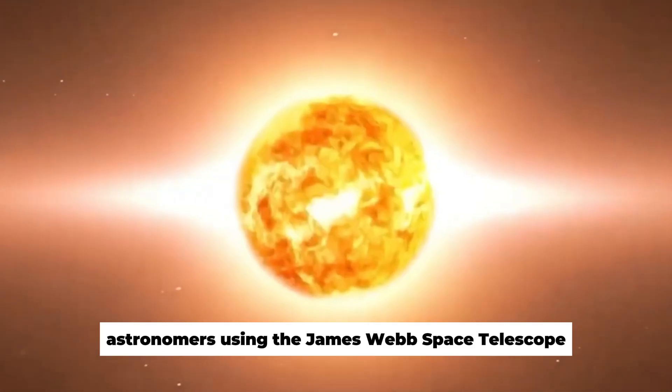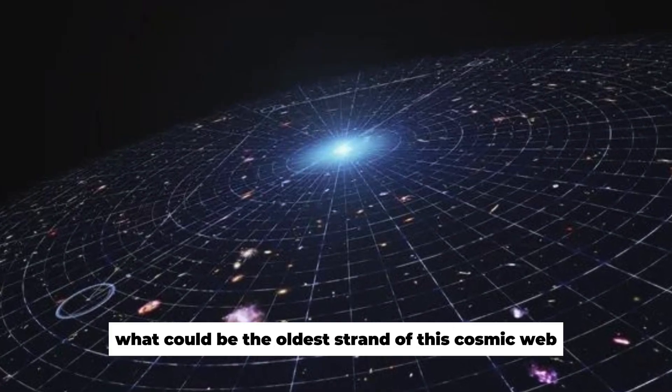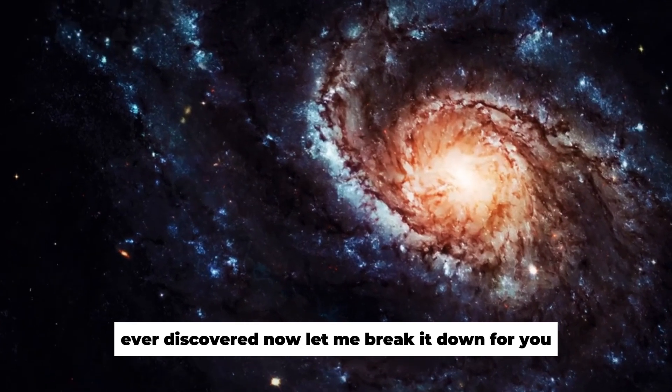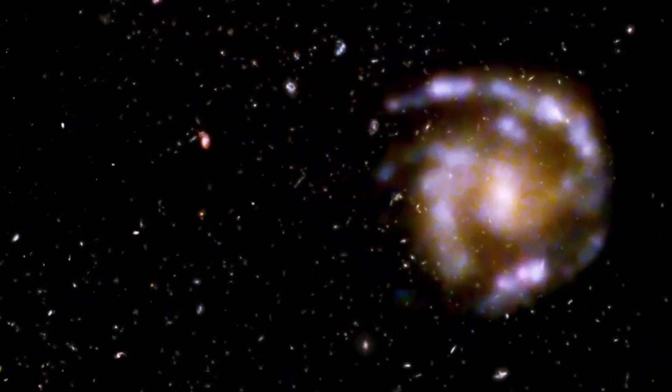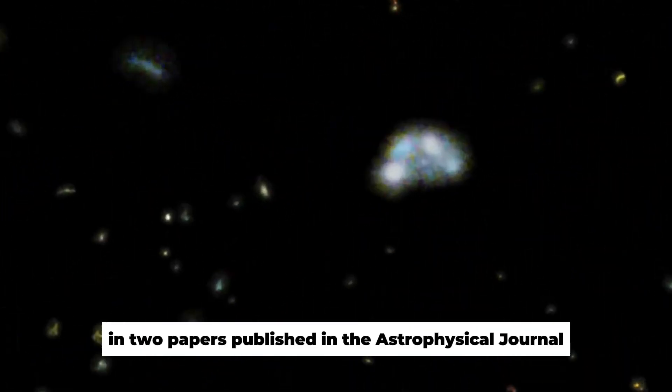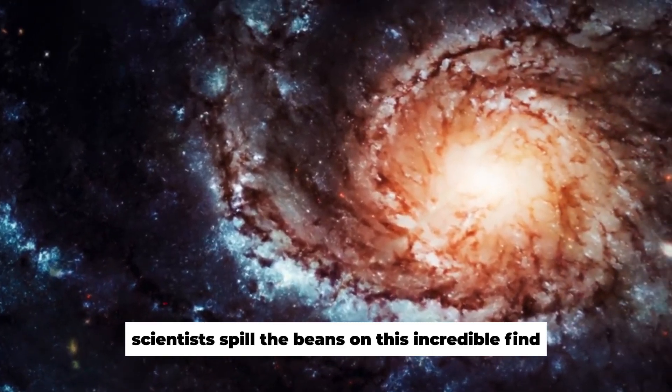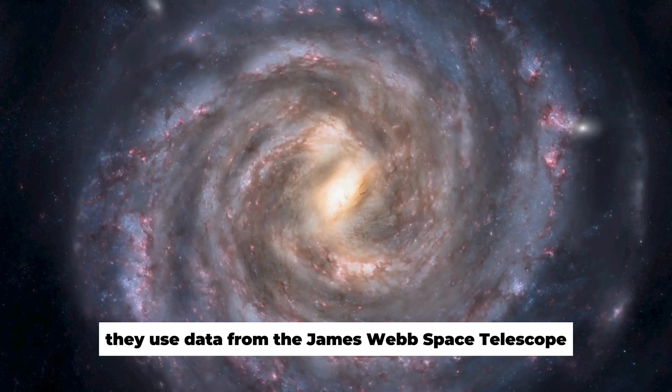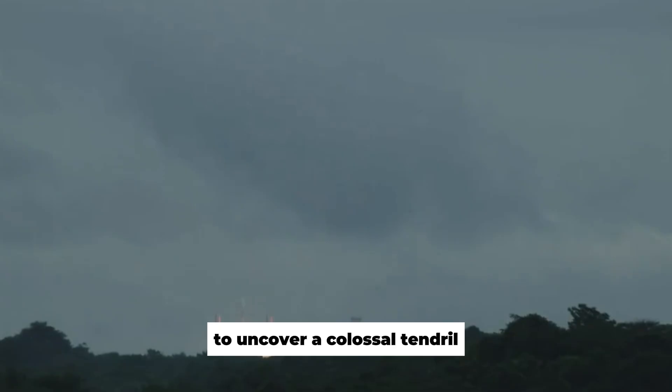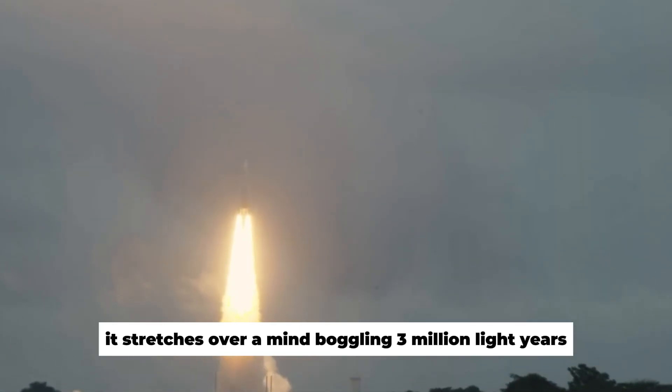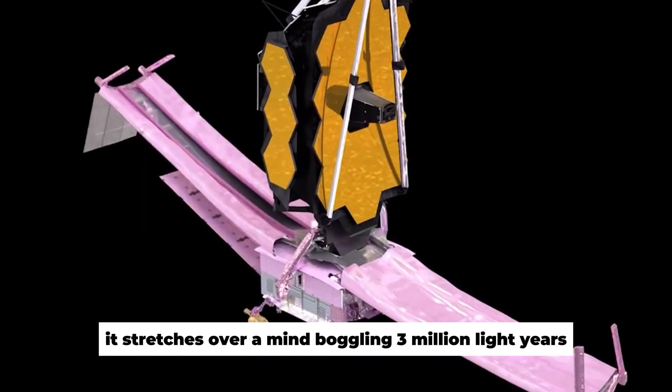Astronomers using the James Webb Space Telescope have just stumbled upon what could be the oldest strand of this cosmic web ever discovered. In two papers published in the Astrophysical Journal Letters, scientists spill the beans on this incredible find. They use data from the James Webb Space Telescope to uncover a colossal tendril made up of 10 closely-packed galaxies. It stretches over a mind-boggling 3 million light-years.